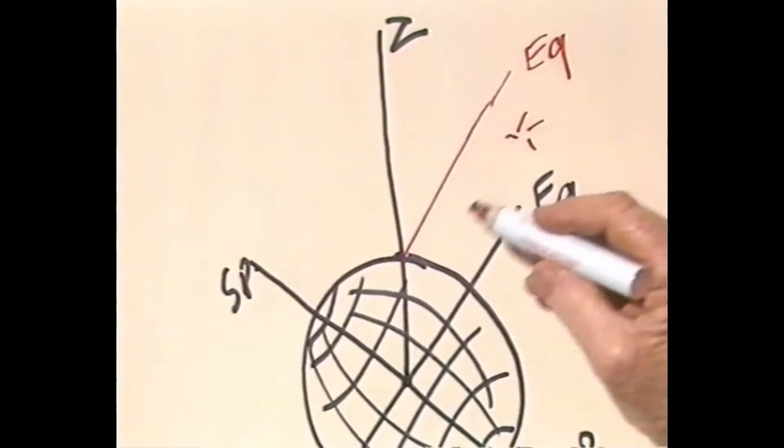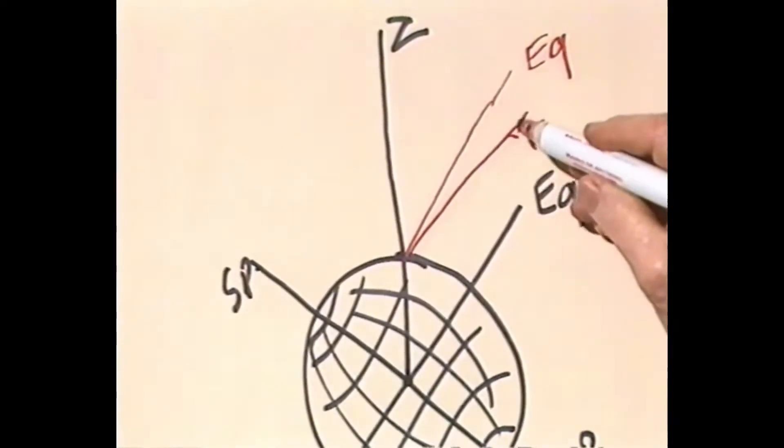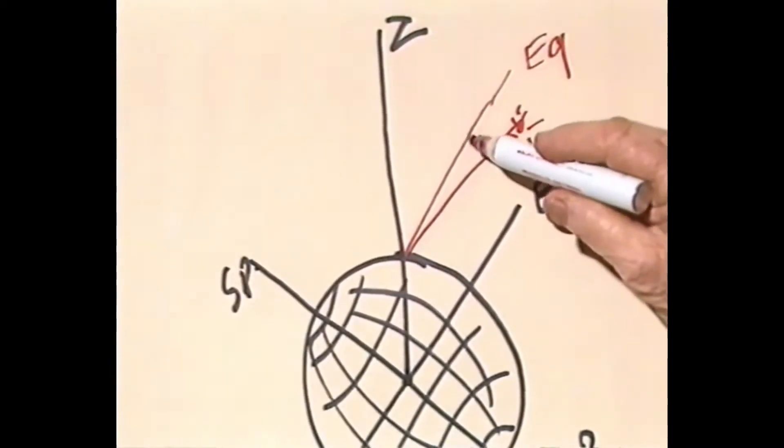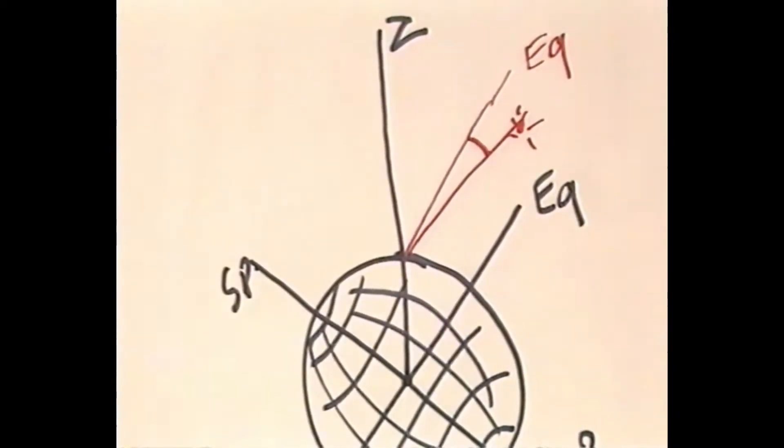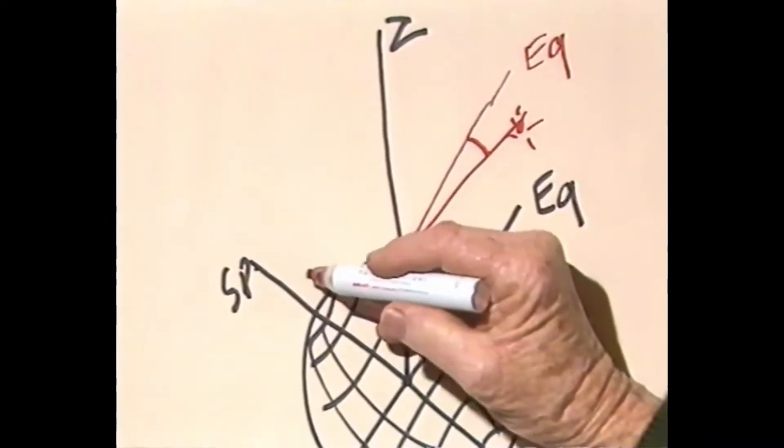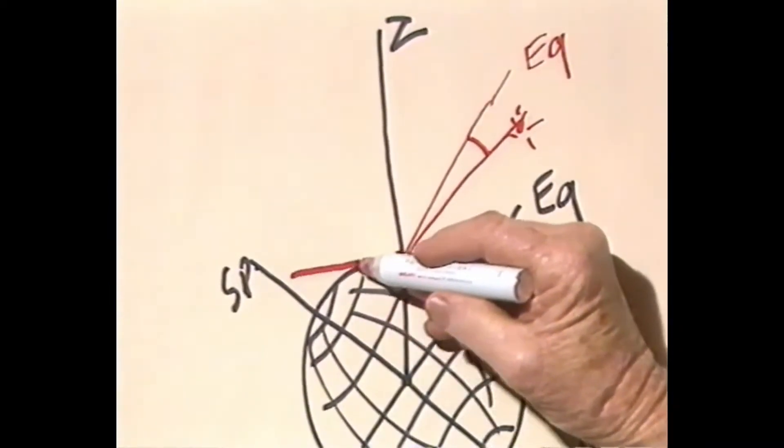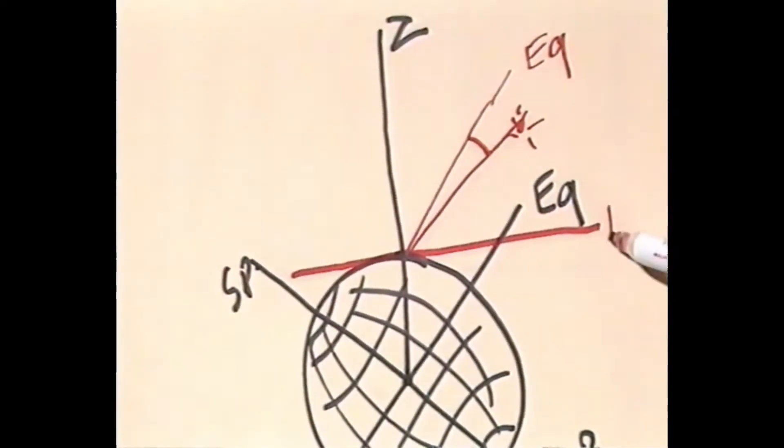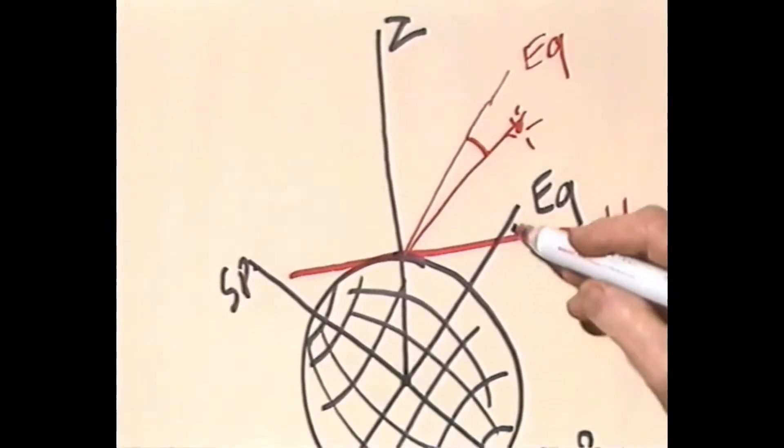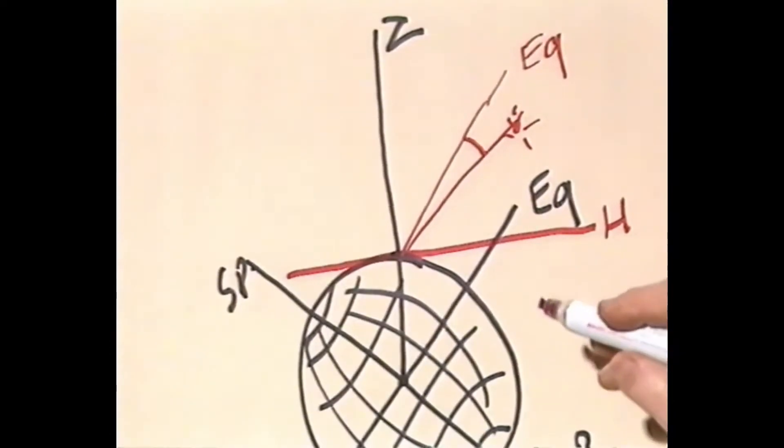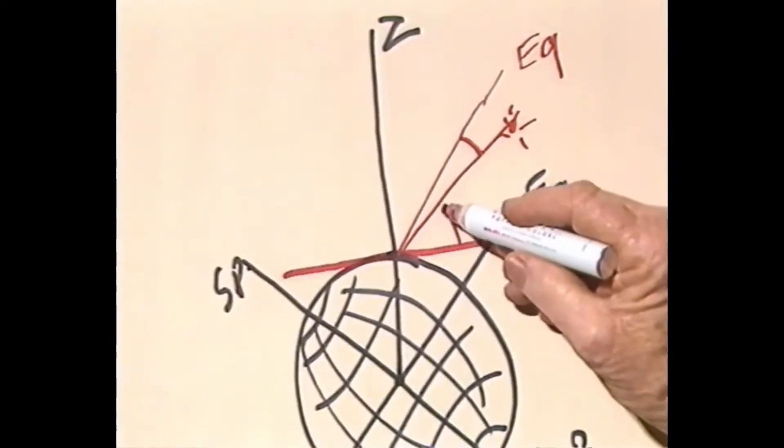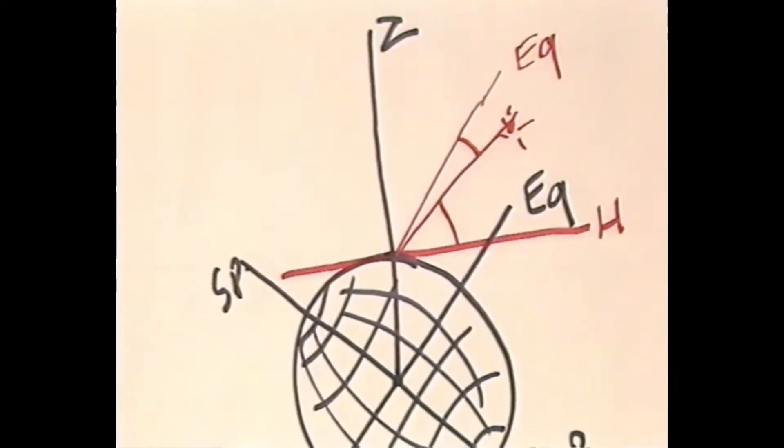Now, the angle that the star makes with the equator is given in the nautical almanac. That's one of its positions in the sky. The line at right angles to the zenith is our horizontal line. With the theodolite, we read this angle up to the star.